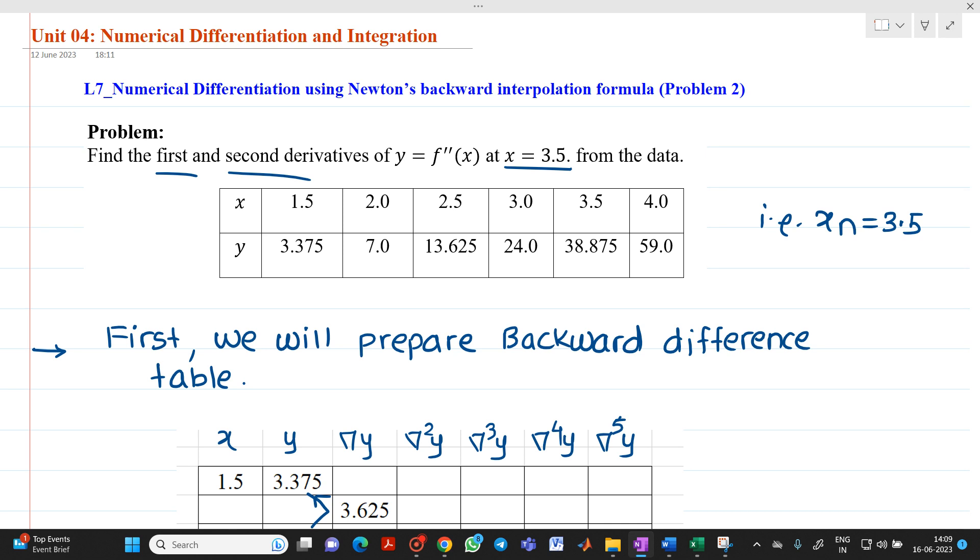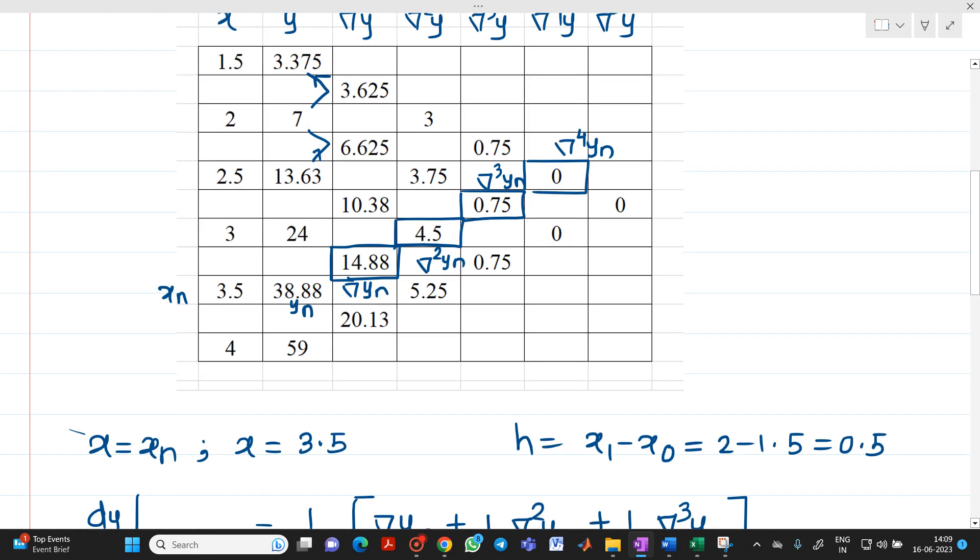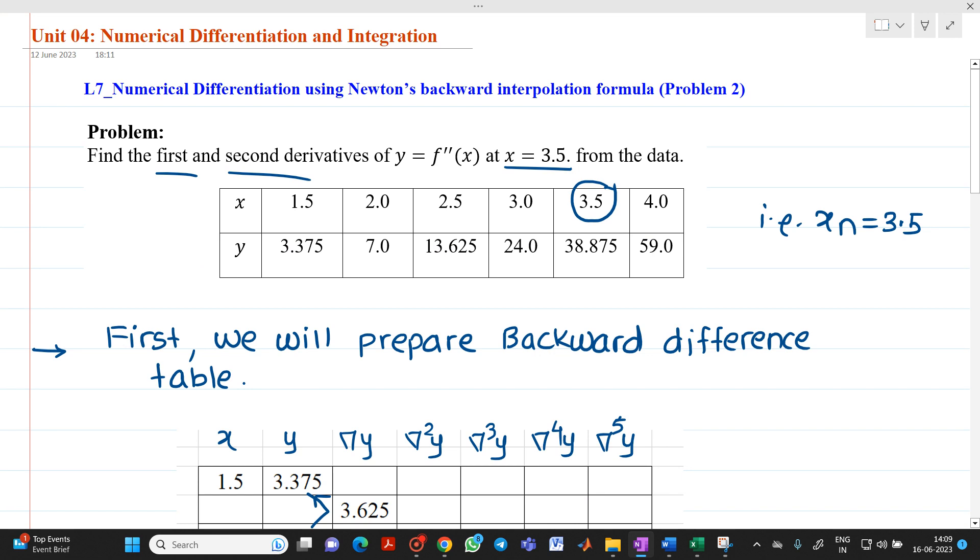As it is required to find out value of f dash of x when x equal to 3.5, that's why here we took this value as xn. This is your yn and this will be your corresponding values of del yn to del raise to 4 yn. Thank you for watching this video.